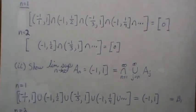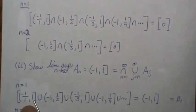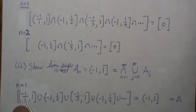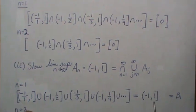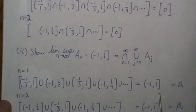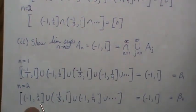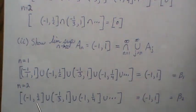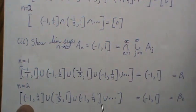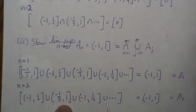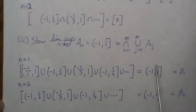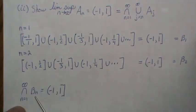When N is 1 we union the sets for N=1, 2, 3, 4 and so on — the union means you take everything. The biggest value on the right is always closed bracket 1, and the smallest on the left is always minus 1, so the union is [-1,1]. We call that B_1. When N is 2 it's the same: the lowest is open bracket minus 1 and the largest on the right is always closed bracket 1. These B_N's are all the same no matter which N you start at, so when you intersect all the B_N's you always get [-1,1].